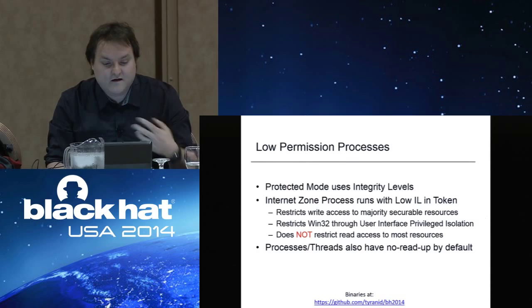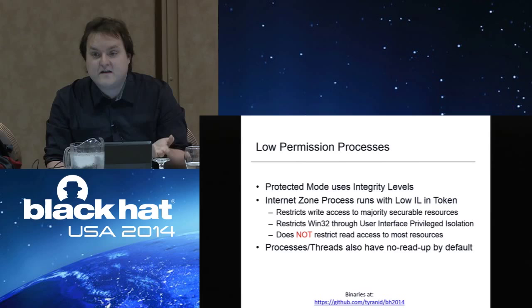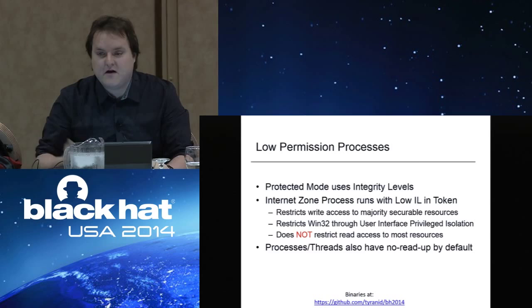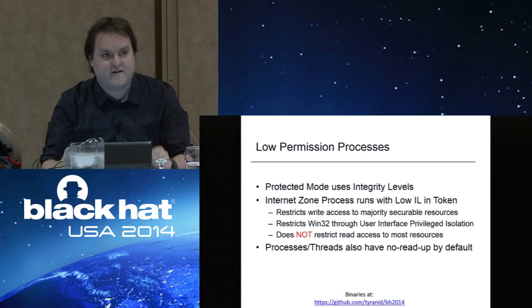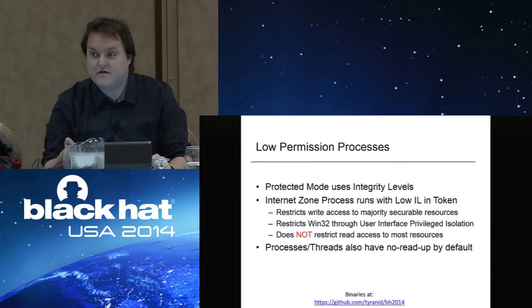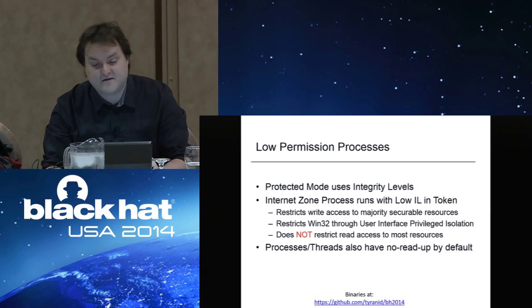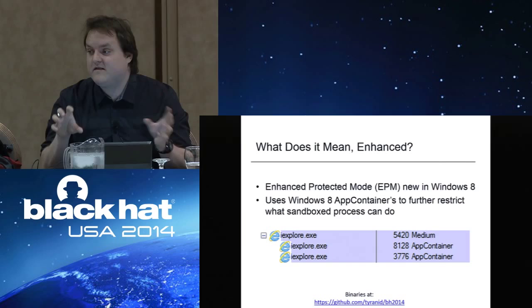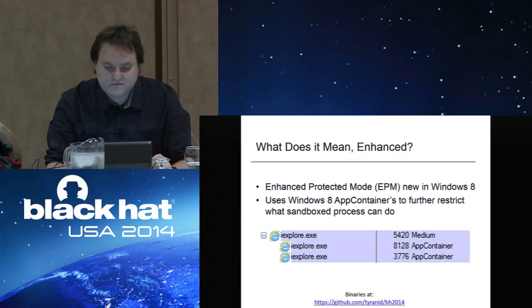One of the limitations of the original Protected Mode implementation was that the low integrity level only restricted the ability to write to resources. The usual modus operandi for an RCE vulnerability would be to pop IE, run code, and install malware permanently in the startup folder or registry. The idea with the sandbox is you can't easily do that because you can't write to those locations. However, nothing stops malware temporarily hoovering off your data because you can still read everything. With Windows 8, they added app containers — which underpin Metro applications — as the new Enhanced Protected Mode sandbox, which is a lot more restrictive.